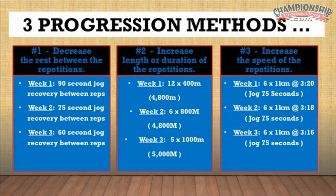Method number one is to decrease the rest between the repetitions. As an example, in week one, the individuals run repeat one kilometers at critical velocity pace and they use a 90-second jog for recovery between each repetition. Week two, the progression is reducing the recovery by 15 seconds and now they jog 75 seconds instead of 90.